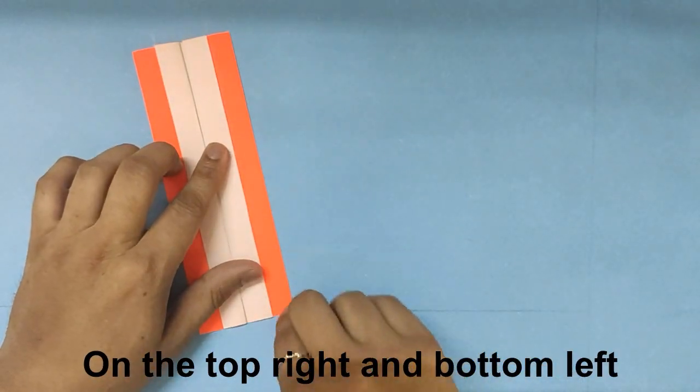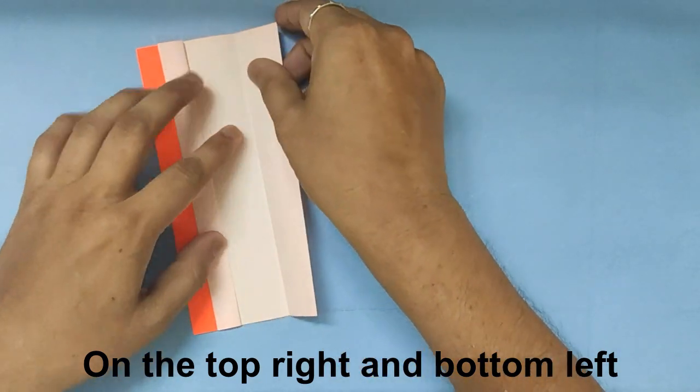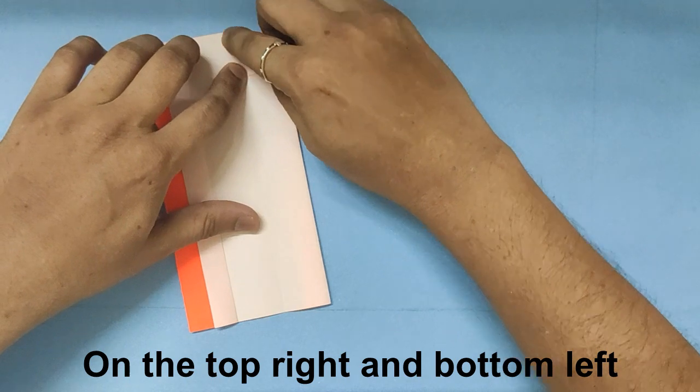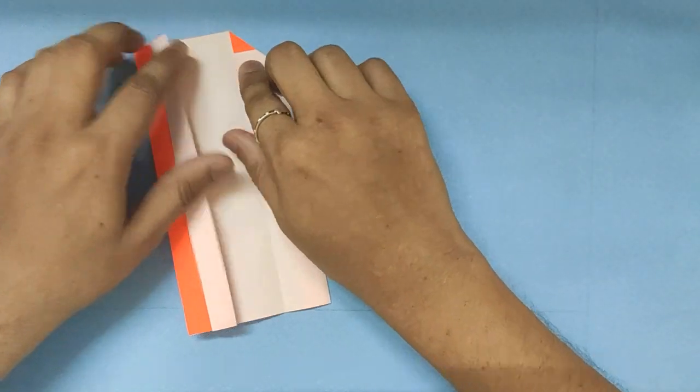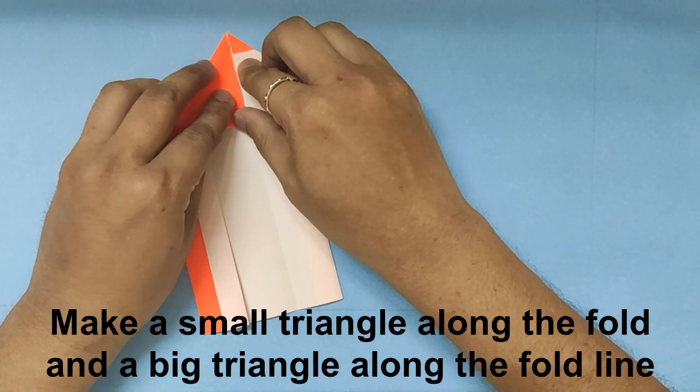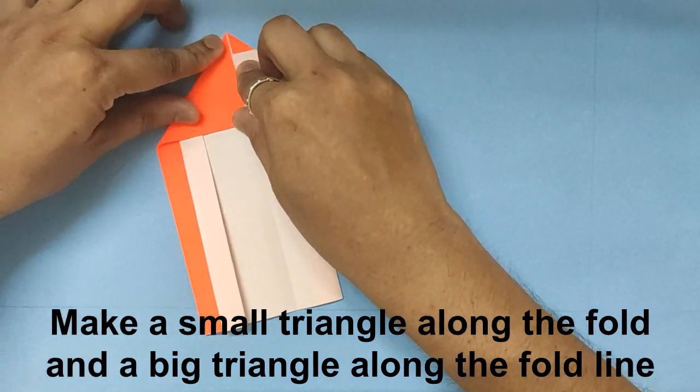On the top right hand corner, you make a triangular fold by opening the flap. And another big triangular fold along the crease, along the fold line.